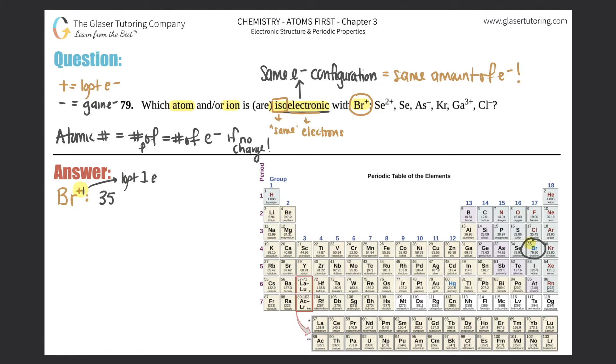Now we just got to find out, out of these six, which one has the same amount of electrons as Br+. Let's start with the first one: Se2+. Start with your atomic number. Selenium is right here. Selenium had an atomic number of 34.